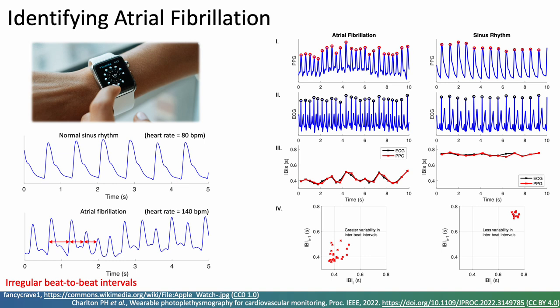In contrast on the left hand side, the spread of points is greater because there's greater variability in the inter-beat intervals, and so by measuring the spread of these points we can have a go at identifying atrial fibrillation.